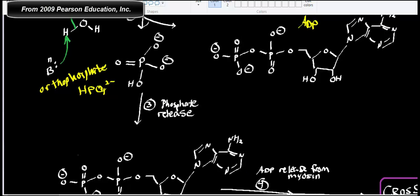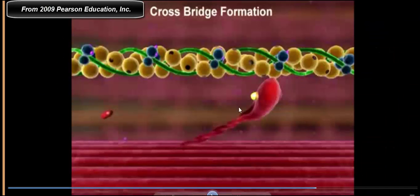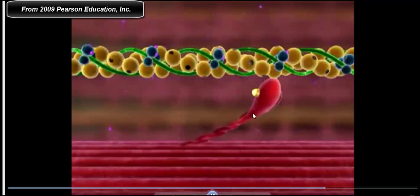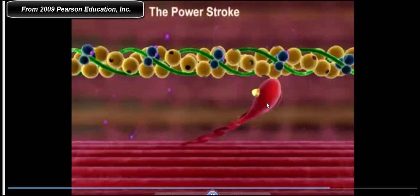The next step we just saw was phosphate release. When this phosphate gets released, it strengthens the myosin-actin interaction. You'll actually see it get more rigid. That's a strengthening of the bond. And now ADP is going to get released.